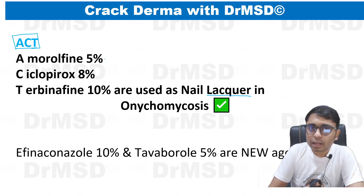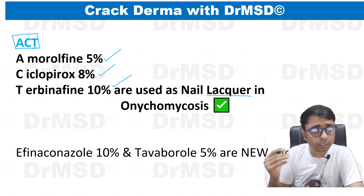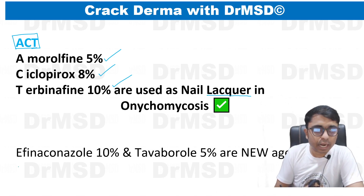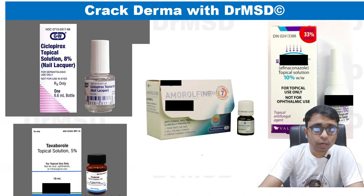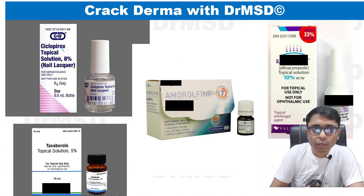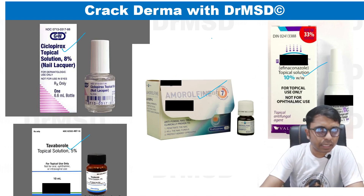Amorolfine, ciclopirox, and terbinafine — the percentages are also in the same order, increasing: 5, 8, and 10 percent respectively. Not only these, but there are also newer agents: efinaconazole 10% and tavaborole 5%, which are also available in the form of nail lacquers. So you can see ciclopirox, tavaborole, amorolfine, and efinaconazole. Terbinafine is still in trials, so most likely it will hit the market soon.